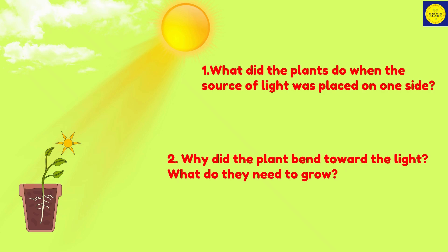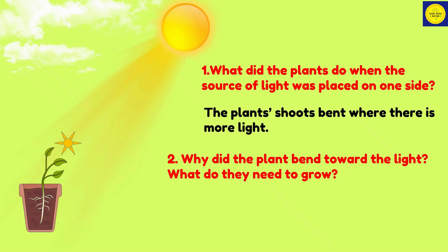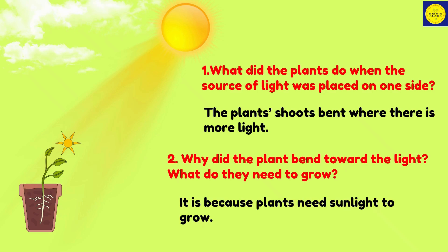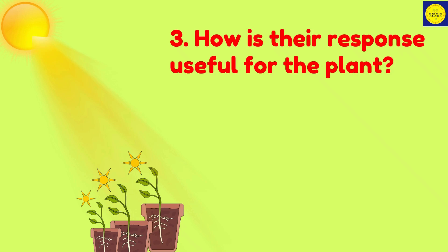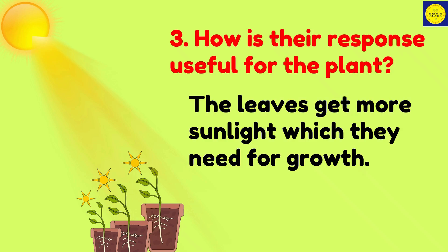Here is another picture. Question 1: What did the plants do when the source of light was placed on one side? Answer: the plant shoots bent toward where there is more light. Question 2: Why did the plant bend toward the light — what do they need to grow? Answer: plants need sunlight to grow. Question 3: How is the response useful for the plant? Answer: the leaves get more sunlight, which they need for growth.